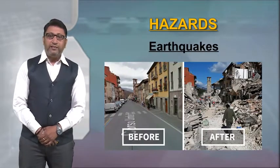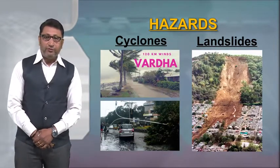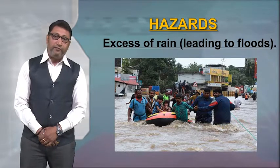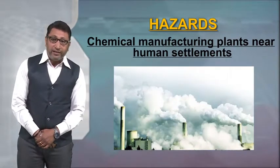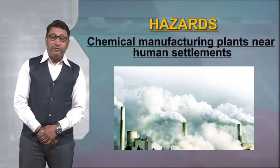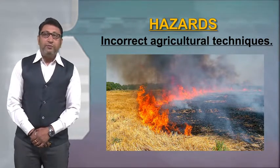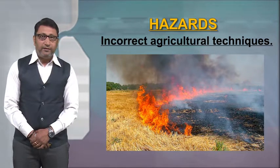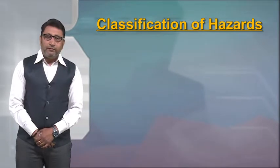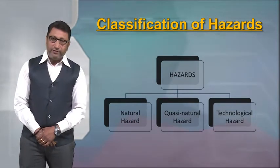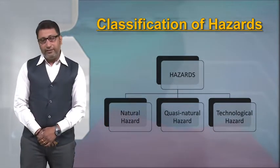A few examples of natural hazards include earthquake, volcanic eruptions, cyclones, landslides, absence of rain leading to drought, and excess of rain leading to floods. Some man-made hazards include chemical manufacturing plants near human settlements and incorrect agricultural techniques. If we need to classify hazards in one broader perspective, there are three categories: natural hazard, quasi-natural hazard, and technological or man-made hazard.